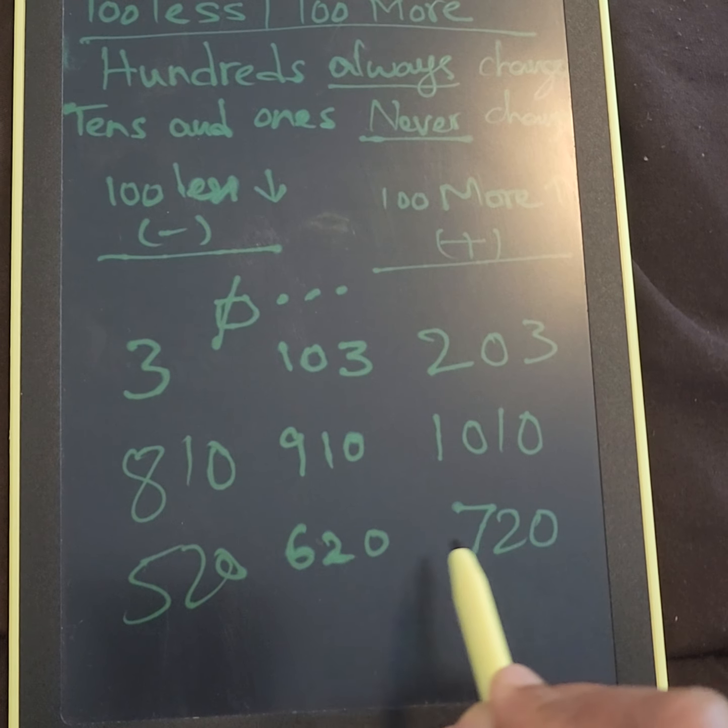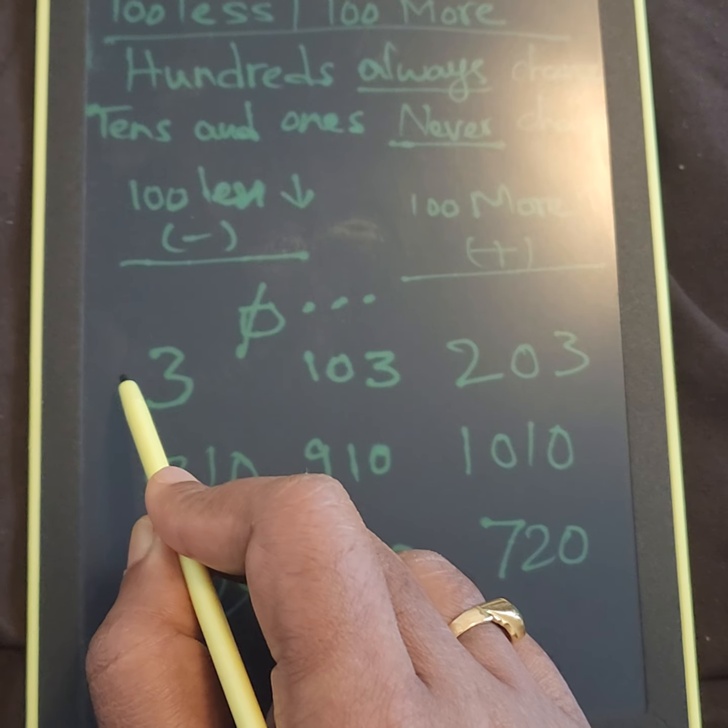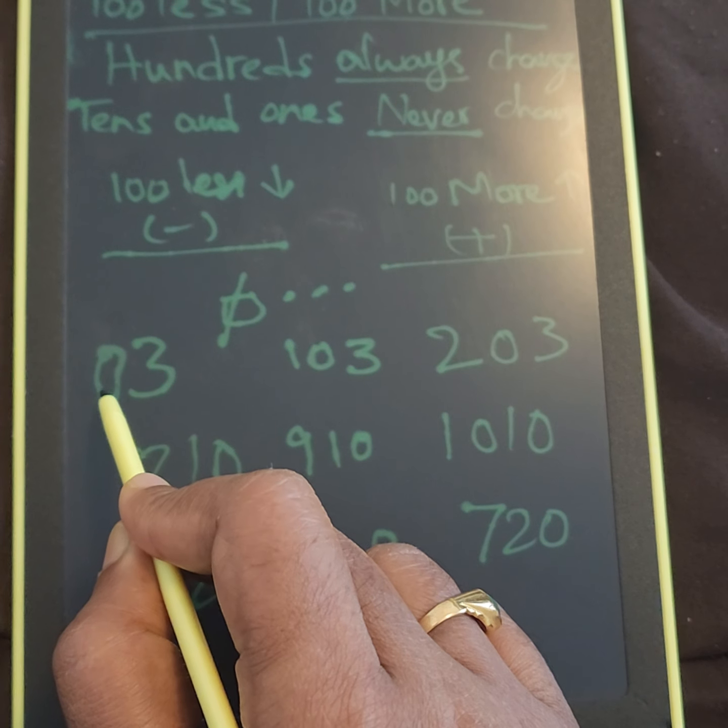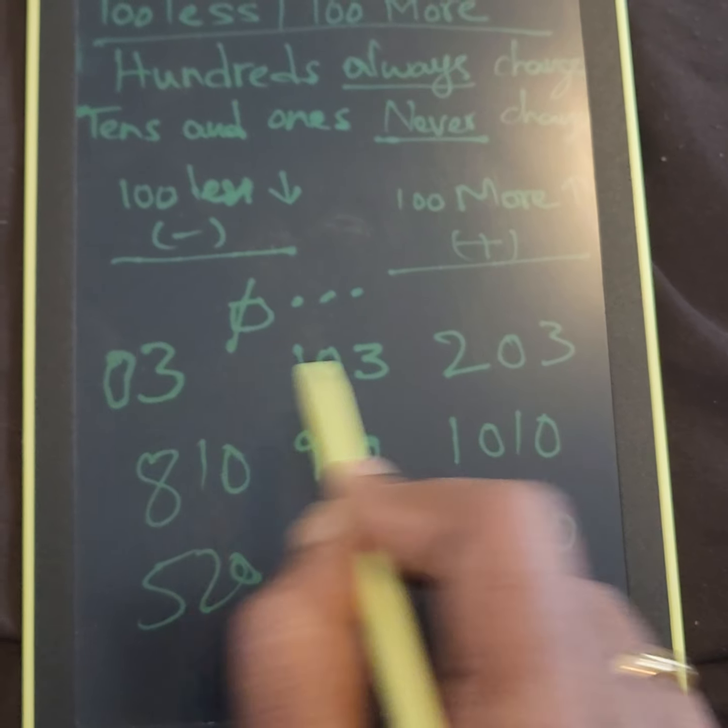Two zero, two zero, one zero, one zero. And here also, if it is zero, there is no value in the left side, so that's why 03 is nothing but three only. So 03, 03.